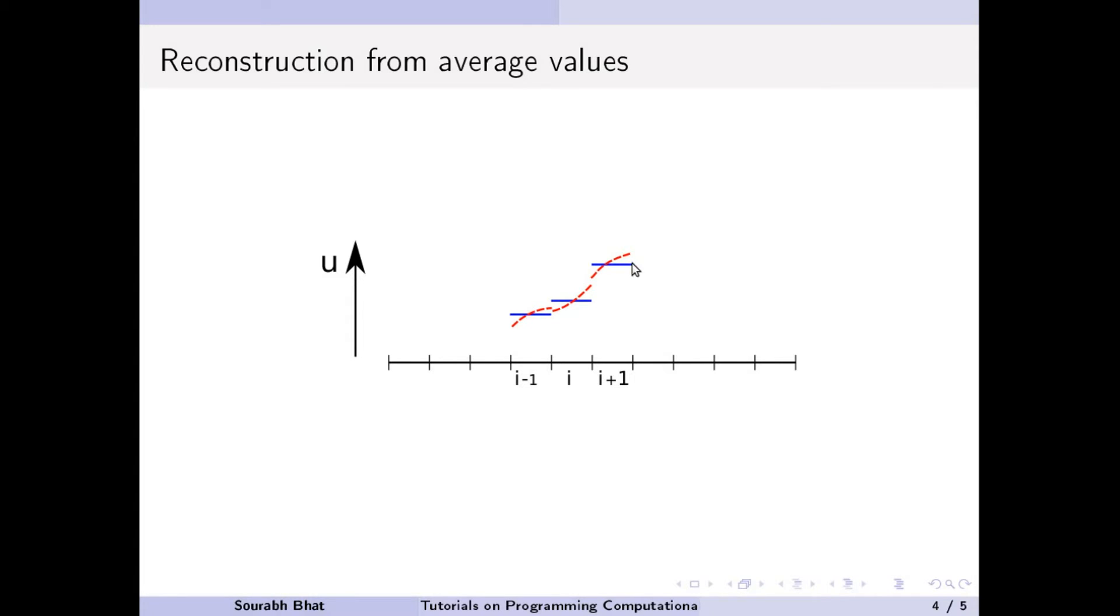For example, assume these three average values, and we can reconstruct. These red lines are the reconstructed form of the distribution inside each cell. The important thing here is that these red lines have to represent the average value. That is, if you take an integral of this function over this cell, then we should get exactly this blue line or blue values.